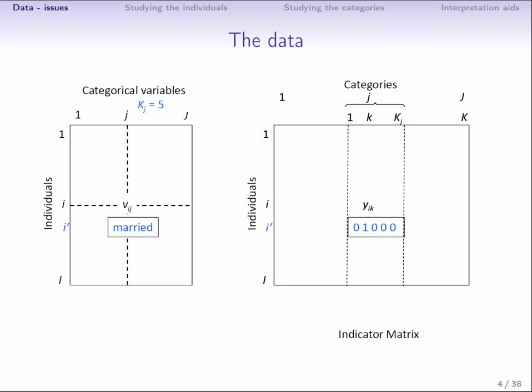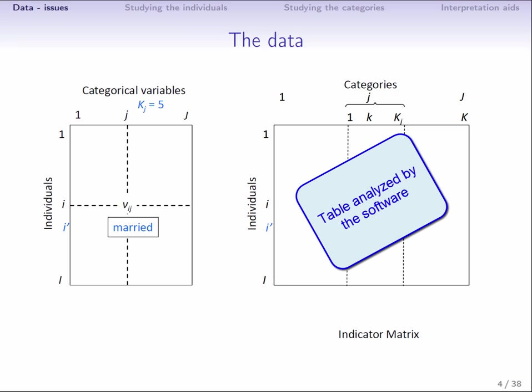Let's take an example. The marital status variable has KJ categories and the individual I is in the married category, which is the second one. In the complete disjunctive table, in the Ith row in the columns corresponding to the Jth variable, we see that there is a one in the second column because this is the category that this individual is in. Clearly, they have zeroes in the other columns for the Jth variable. Here, we see why this table is called disjunctive and complete. It's disjunctive because in each block of columns, there is only one one and all the rest are zeroes, and complete because there has to be at least one one. The complete disjunctive table plays a central role in MCA, as it's this that is analyzed by software packages.